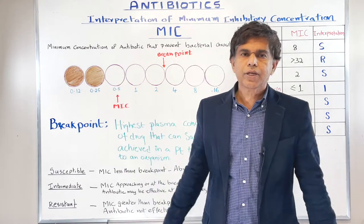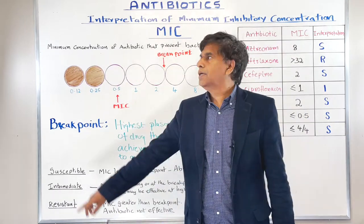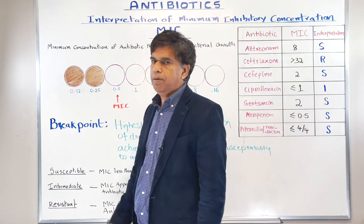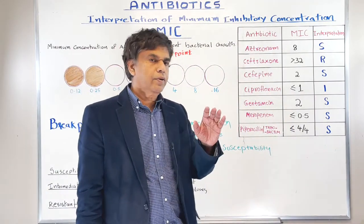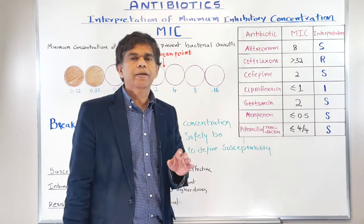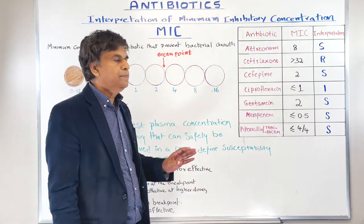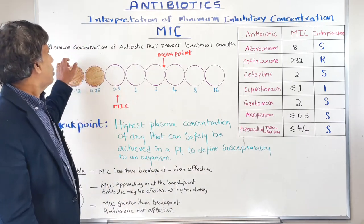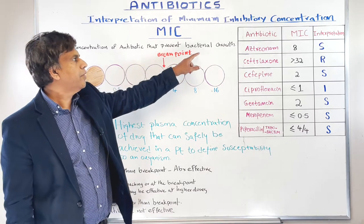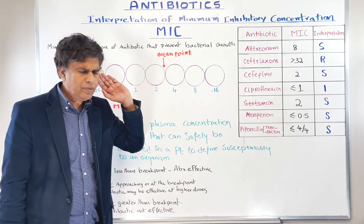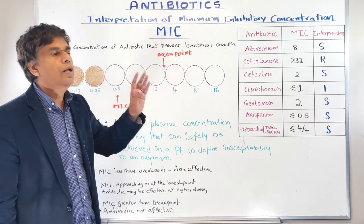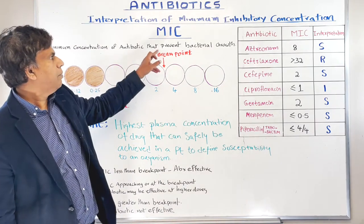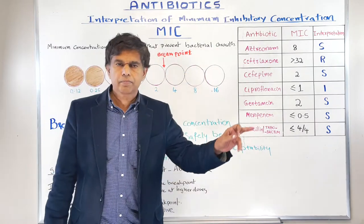There are two terms we need to know. We'll start with MIC — the minimum inhibitory concentration. This is the minimum concentration of antibiotic that prevents bacterial growth. Very important to know, especially when you're managing a patient in the hospital.